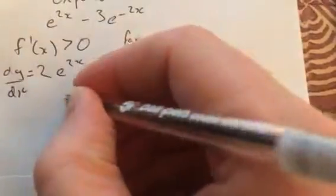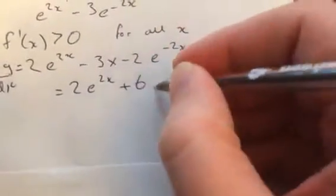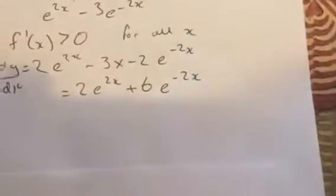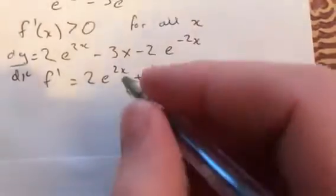And that remains the same because of the nature of an exponential function. Now how is that always greater than zero? It's 2e to the 2x plus 6e to the minus 2x. So that's f dash x, or dy dx.